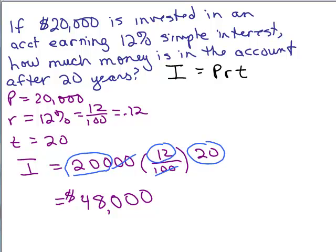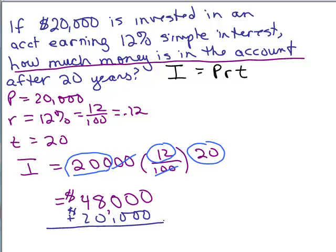Now, how much money is in the account? That's a different question. So I have my $20,000 that I get to add on to that. That was already in the account to begin with. And so my answer is $68,000.